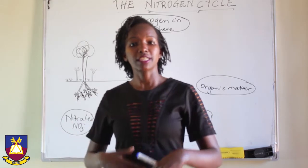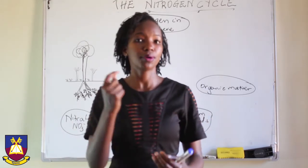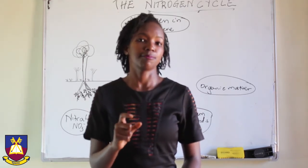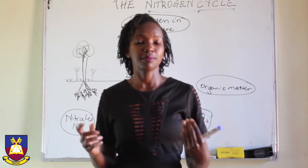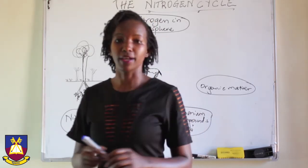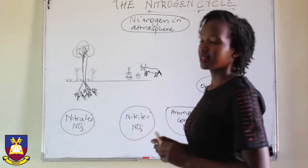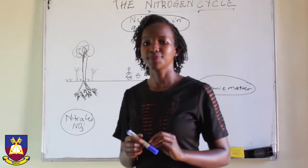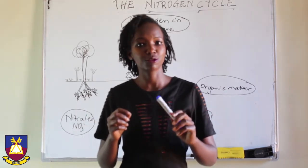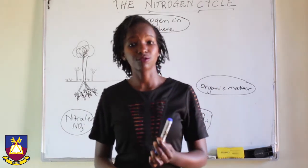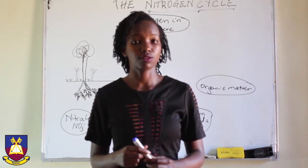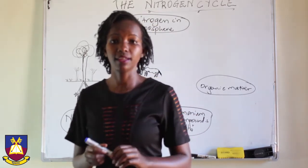So you breathe nitrogen in and breathe it out because your body cannot make use of nitrogen just the way it is. The same applies to every other animal and plants too. Now atmospheric nitrogen is present in large amounts, but there are processes that convert it into a form that is usable by plants or animals. Let's start with lightning.